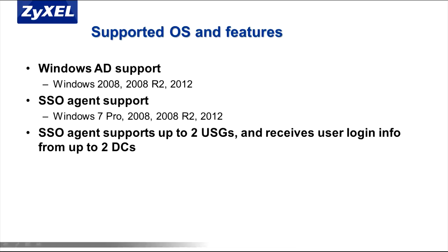Once you have the software, install it on a host machine. This host machine could even be the domain controller itself. The software will run on the following platforms: Windows 7 Professional 32 and 64 bit, Windows Server 2008 Enterprise 32 and 64 bit, Windows 2008 Release 2 64 bit, and Windows Server 2012 64 bit.